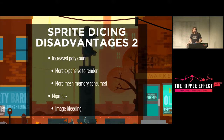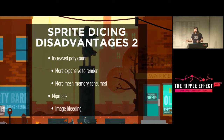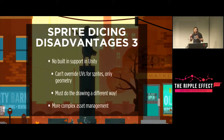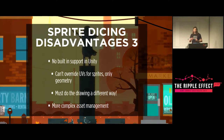Because we're now working with a rearrangement of existing pieces, we have an increased poly count per sprite, making it more expensive to render and increasing the memory burden for the meshes. When dealing with packed images and atlases, mipmapping can lead to bleeding between pieces. There's also no built-in support for this in Unity — in Unity you can override the geometry of a sprite but you can't override its UV coordinates, so you can provide a tighter outline but you can't override the texture coordinates it's drawing from.